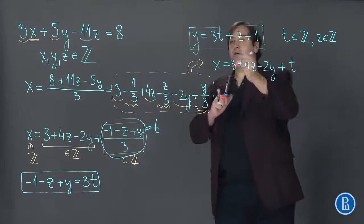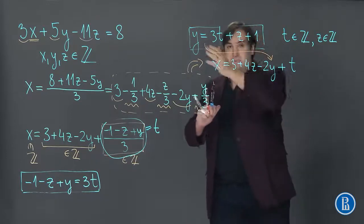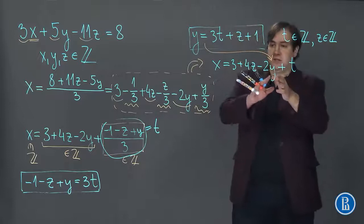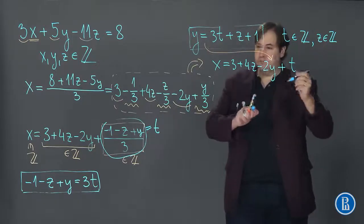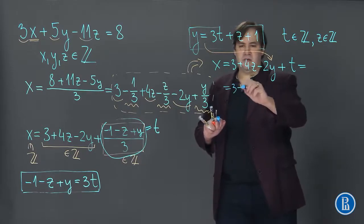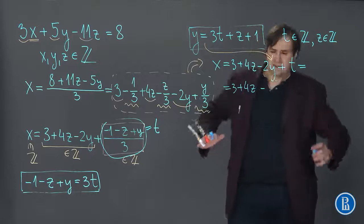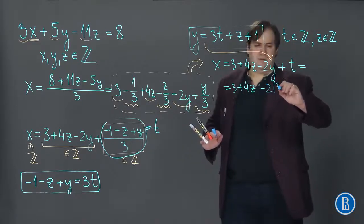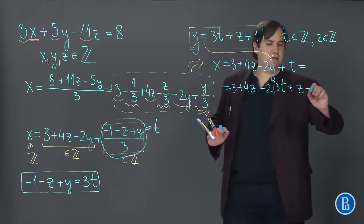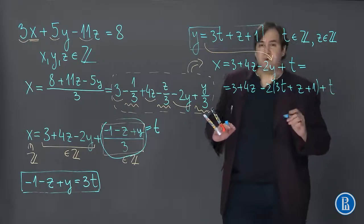And now since we know the expression for y via t and z, we can use it here. Substitute, and then x will be equal to 3 plus 4z minus 2 times (3t plus z plus 1) plus t.